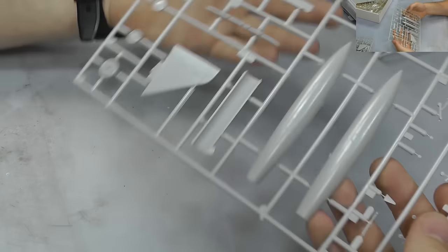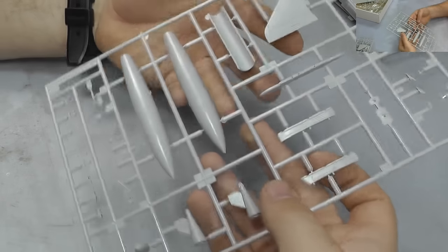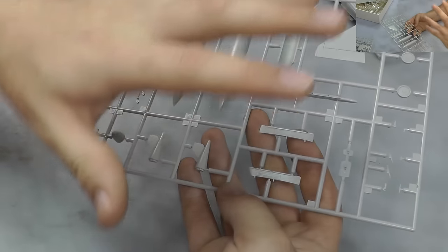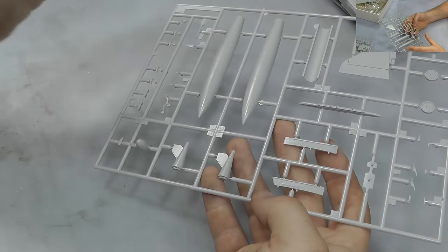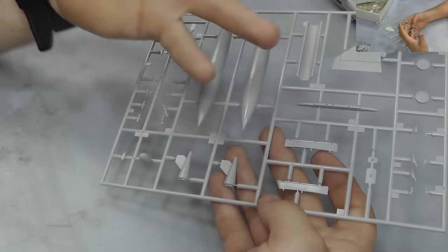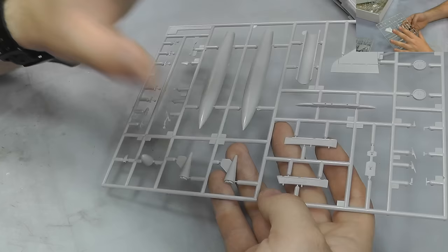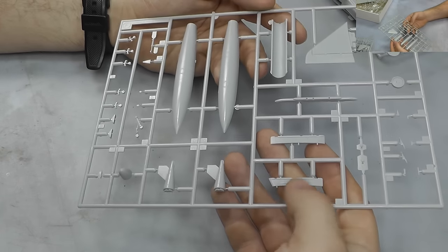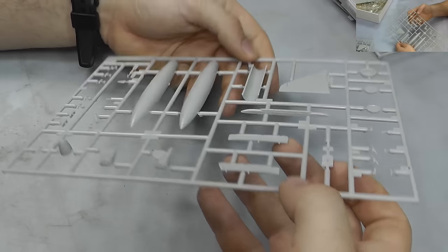Moving along, we have two sprues here that are the same. And this is where we've got our fuel tank. We've got some pylons, so we've got the pylons at least to put the weapons that we don't have with this kit on here. So it is one of these kits which, by the way, costs £50. It would be a kit that you'd probably want to go out and buy aftermarket weapons or use whatever you've got in your stash.